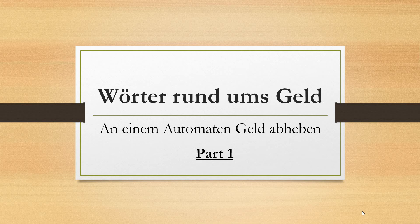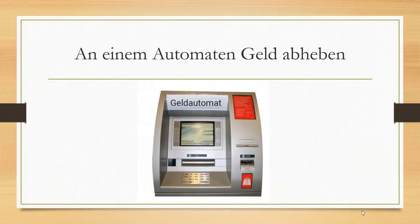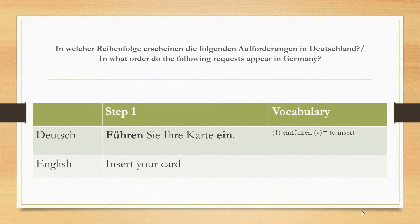This is the ATM machine, or 'Geldautomat,' that you would generally find in Deutschland, or Germany. The special thing is that you won't find 'ATM' written on it — the word used is 'Geldautomat.' We have used the preposition 'an einem Automaten,' meaning 'at an ATM machine,' where you have to withdraw money — 'Geld abheben.'